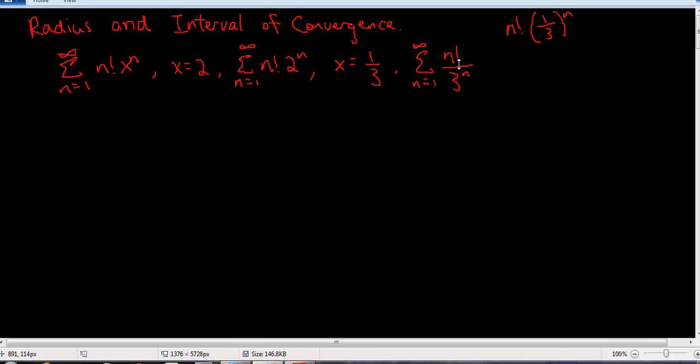So what does that tell us? As n gets really big, the top gets way bigger than the bottom. So if the top is really big compared to the bottom, then your series will go to infinity because the individual terms you're adding are going to infinity. In fact, you could write this out. If n is, say 100, then you'd have 100 times 99 times 98 all the way down to 1, and then you would just have a bunch of 3s. You would have 3 multiplied by 3, 100 times, and you'll be able to see that the top goes to infinity much faster than the bottom.